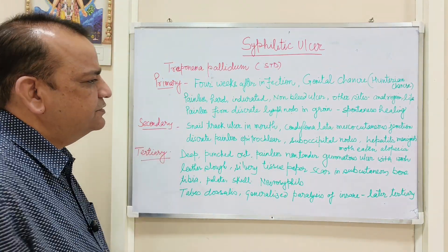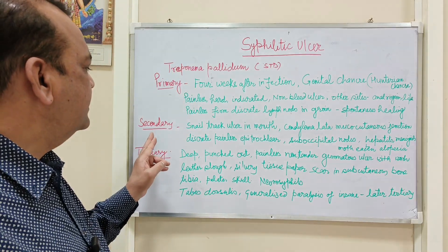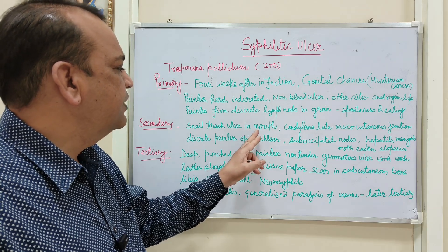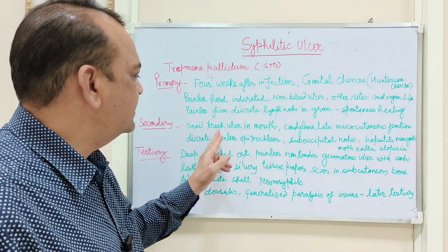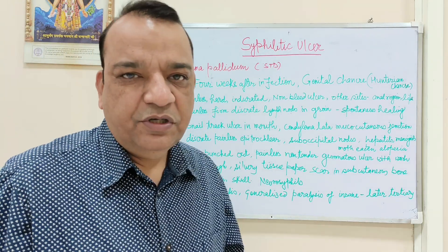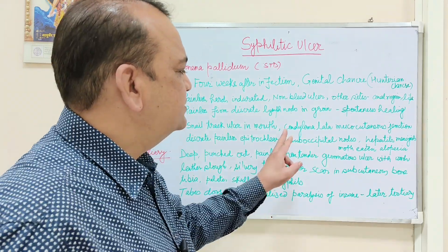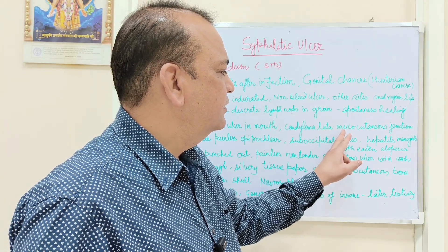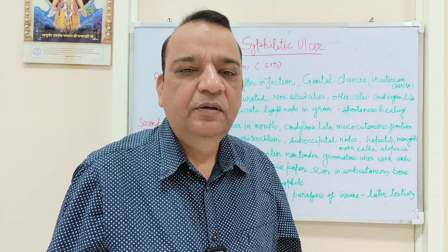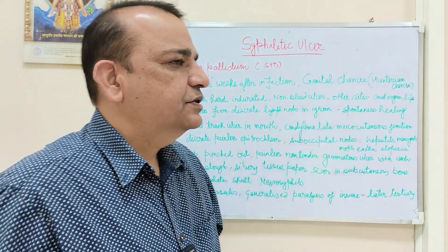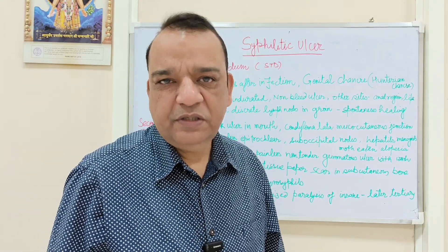In secondary syphilis, ulcers occur in the mouth and they are snail track ulcers — a characteristic feature of secondary syphilitic ulcer. There is also condyloma lata involving the mucocutaneous junction. Latum is singular, lata is plural. Most importantly, it occurs in the anal canal at the mucocutaneous junction.